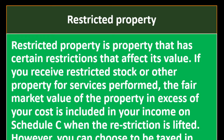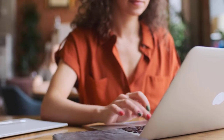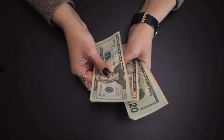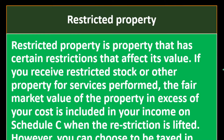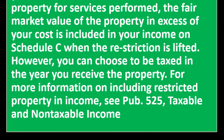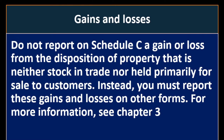If you do work and get paid in cash, it's straightforward. If you get paid in something else, you have to value what you received. If there's a restriction on what you can do with it, that lowers the value while the restriction is in place, and removing it increases the value. If you receive restricted stock or other property for services performed, the fair market value of the property in excess of your cost is included in your income on Schedule C when the restriction is lifted. However, you can choose to be taxed in the year you receive the property. See Publication 525 for more information.